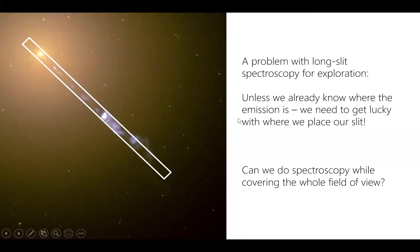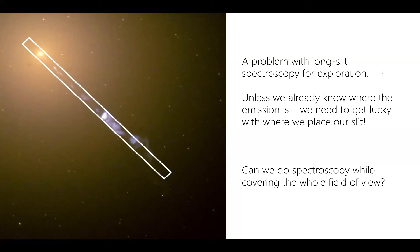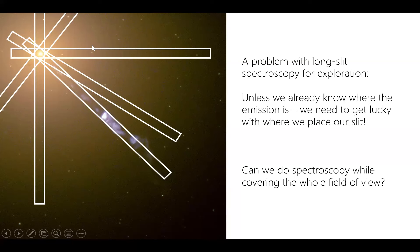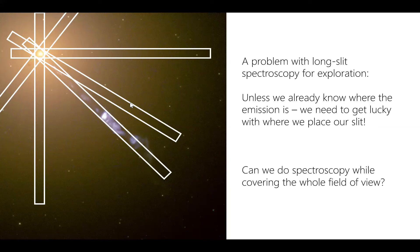One problem with using a slit is that you need to know where to put it. If you're trying to observe cosmic web gas flowing into a galaxy, unless you already know where that gas is, using a slit is quite complicated — you need to get lucky and have the slit line up with the gas. One paper's toy model estimated that if you randomly place slits, you only have about a 37% chance of finding bipolar emission. Long-slit spectroscopy is elegant, but if you're exploring and don't know where the emission is, you really want to cover the whole field of view.